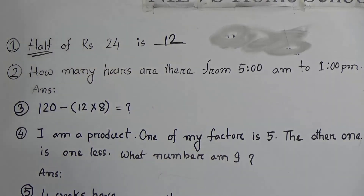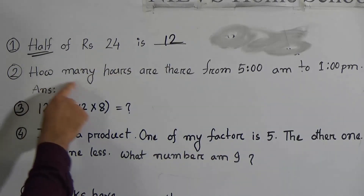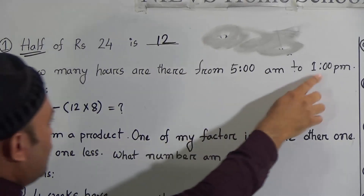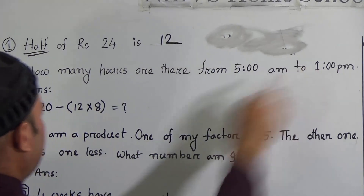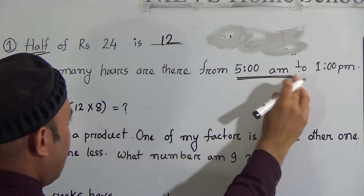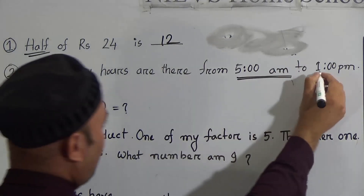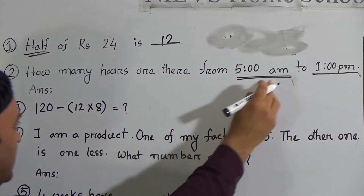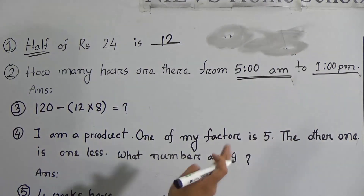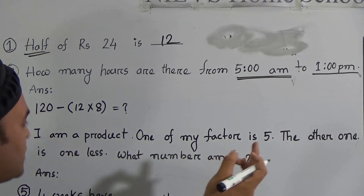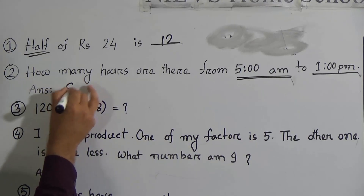Number two: how many hours are there from 5 a.m. to 1 p.m.? You know that 5 a.m. means morning and 1 p.m. means noon. That means counting from 5: 6, 7, 8, 9, 10, 11, 12, and 1 — that means 8 hours. Therefore, how many hours from 5 a.m. to 1 p.m. is 8 hours.